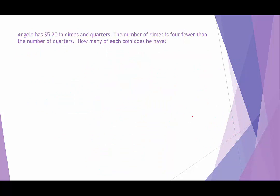Our next example: Angelo has $5.20 in dimes and quarters. The number of dimes is four fewer than the number of quarters. How many of each coin does he have? The total value gives us 0.10D plus 0.25Q equals 5.20. The number of dimes is four fewer than quarters, so D equals Q minus 4.